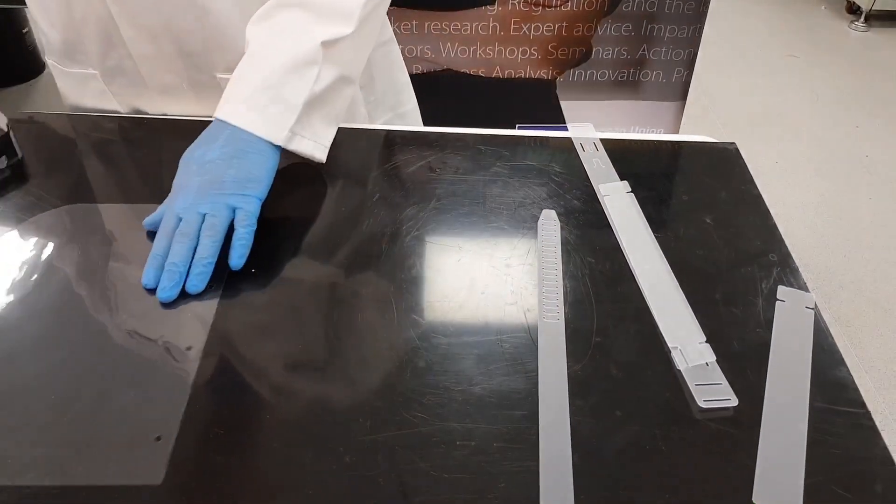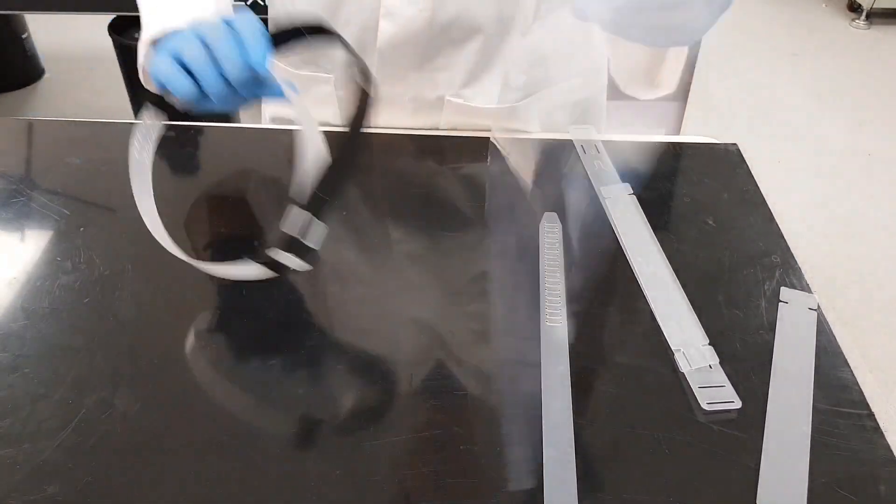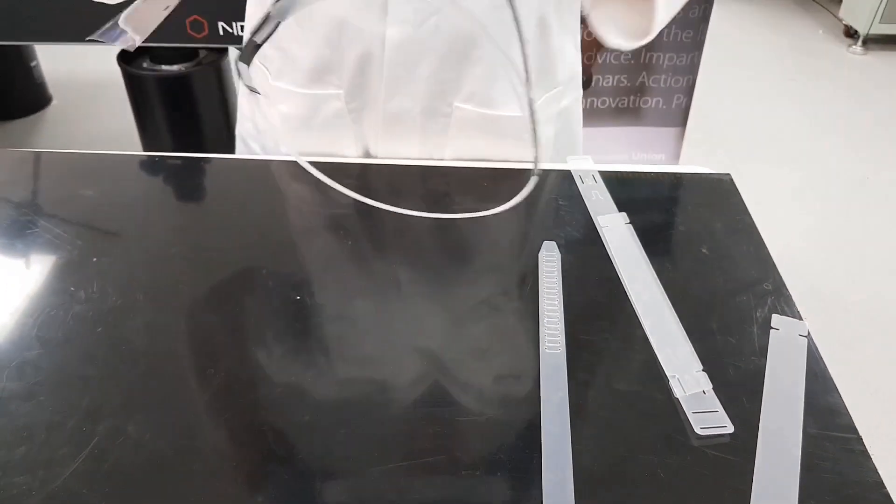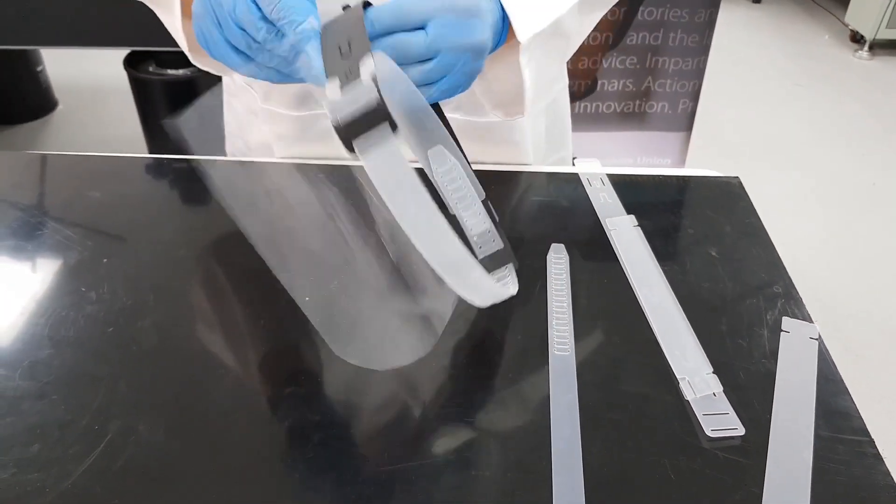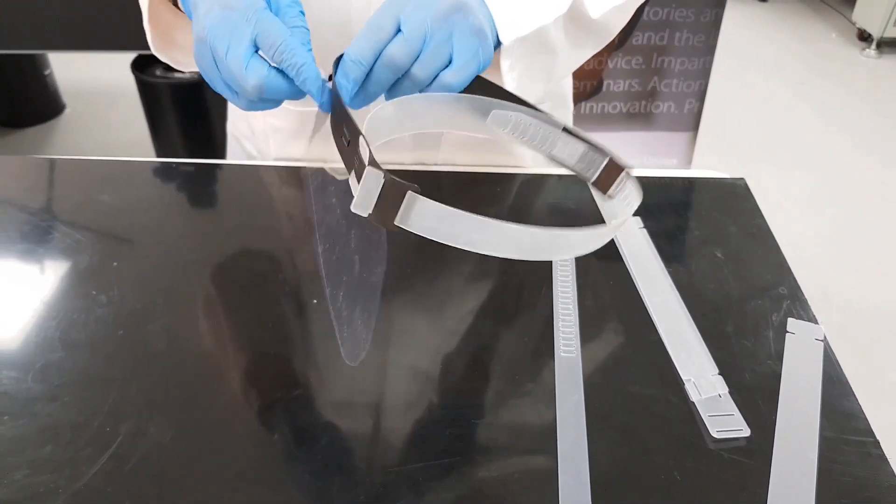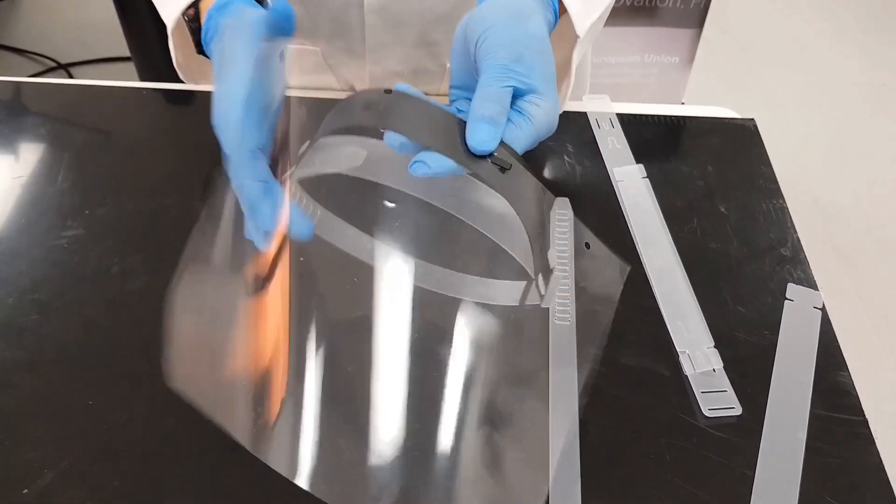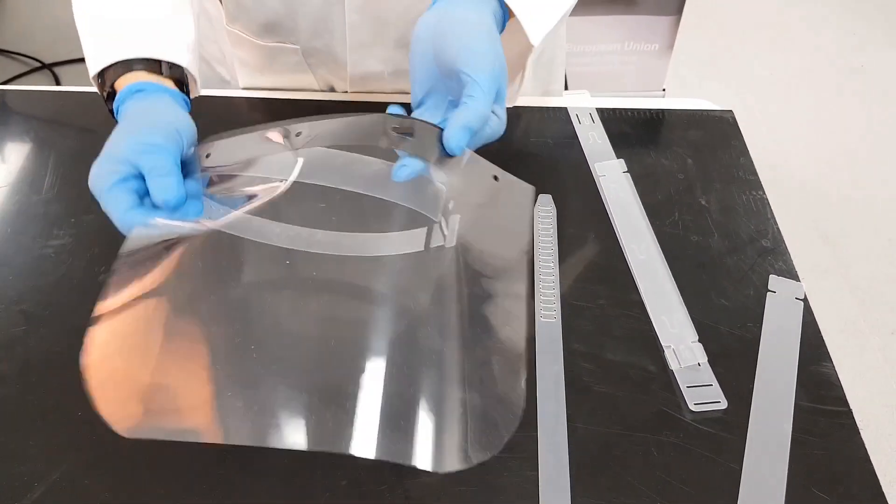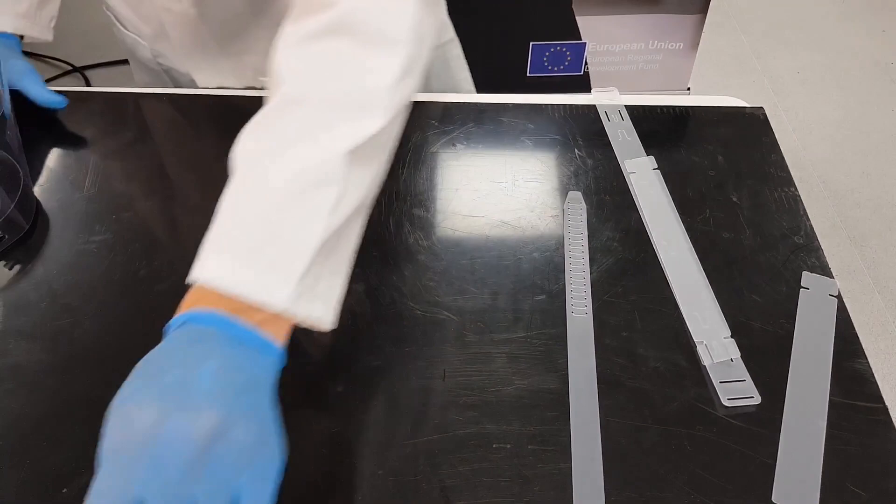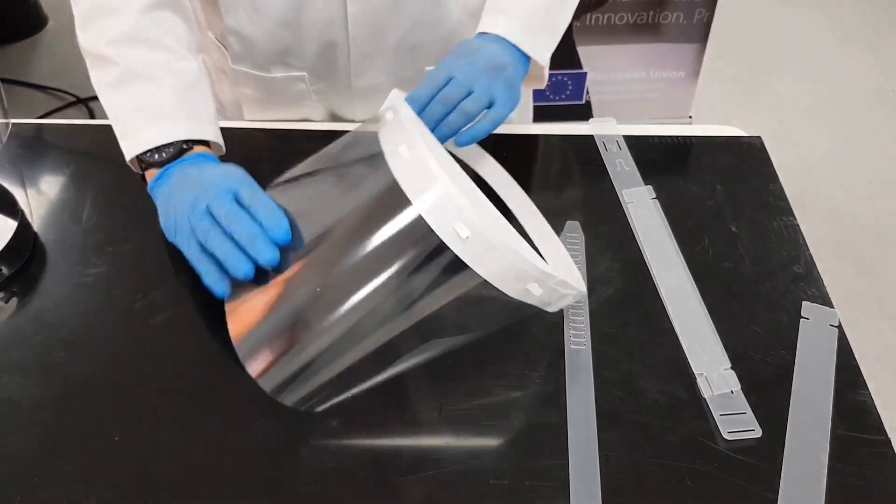After that, we take the acetate, starting from the middle, and feed it through the punched holes like so. We feed that through all four holes on the headband to give us the finished visor.